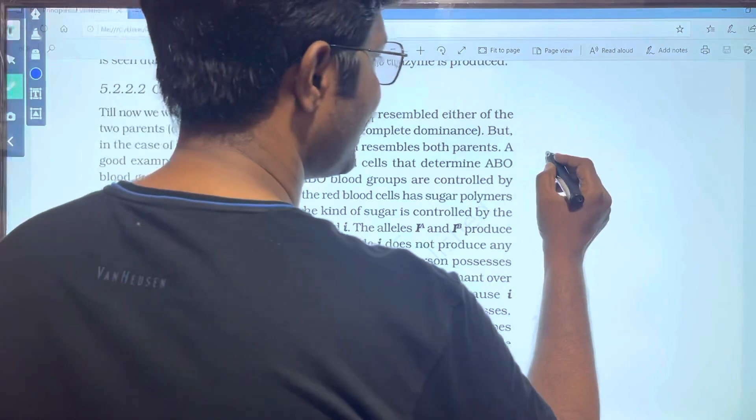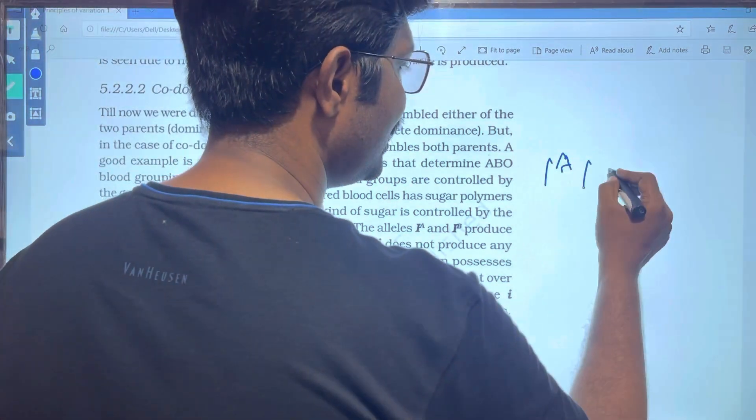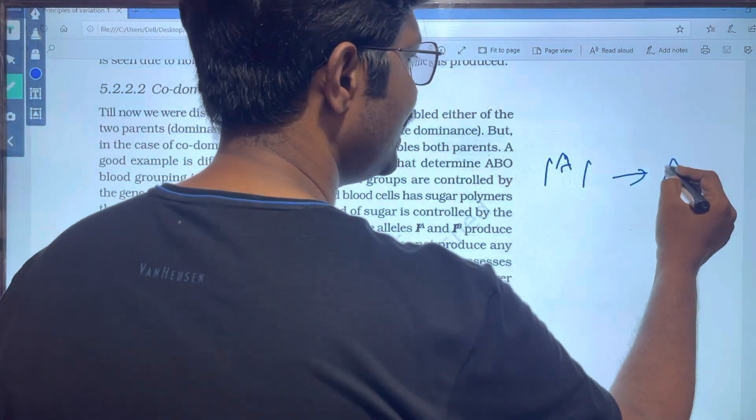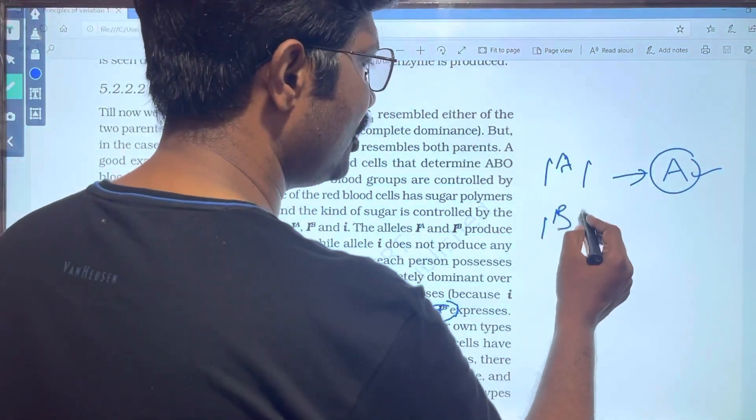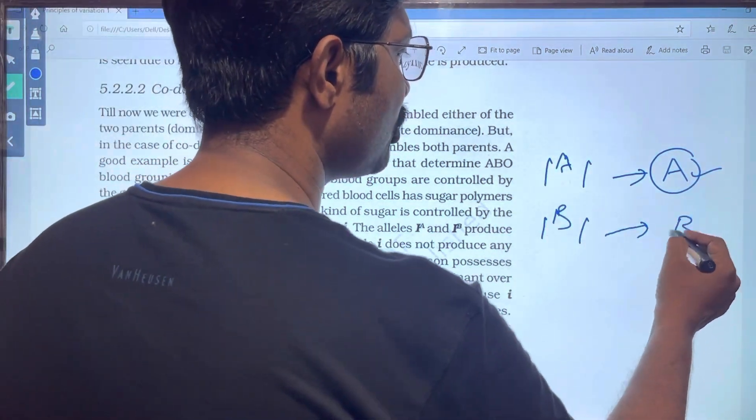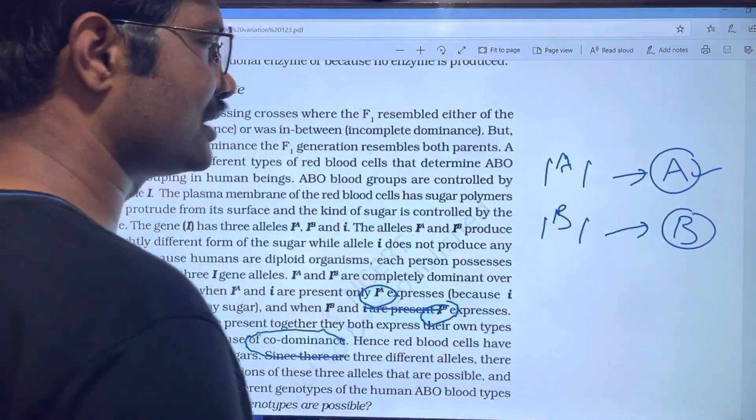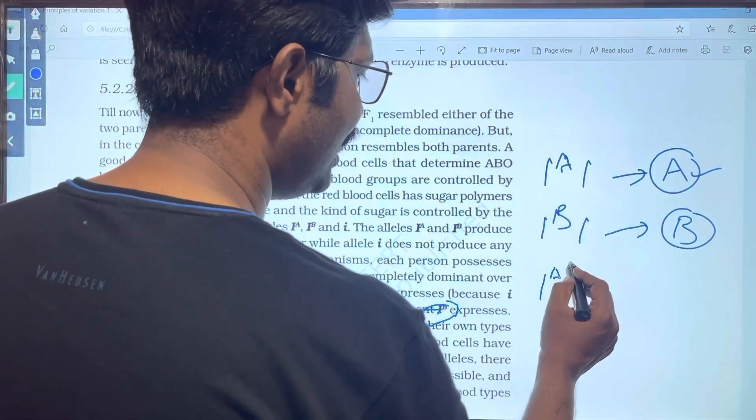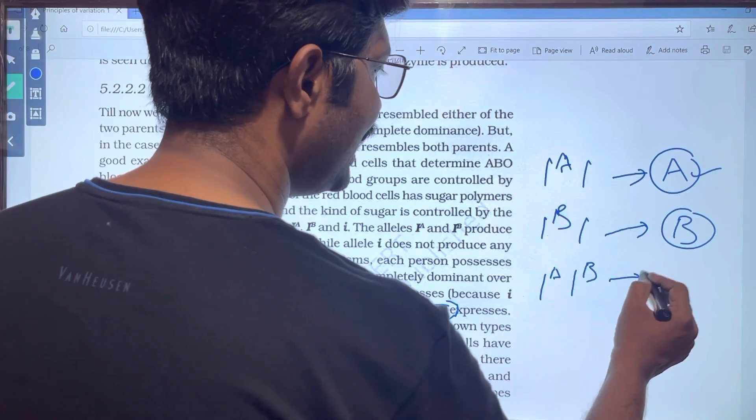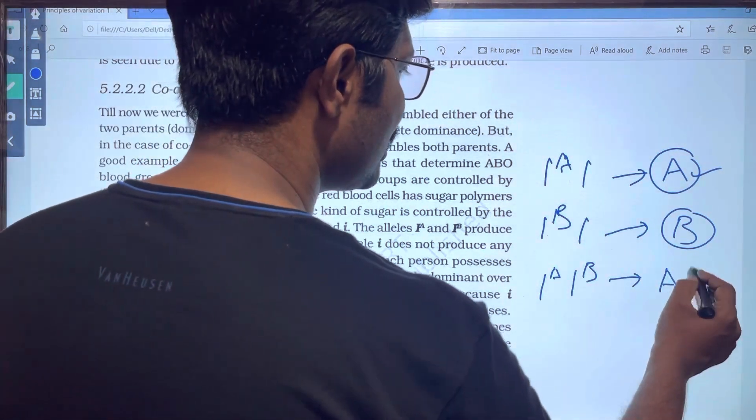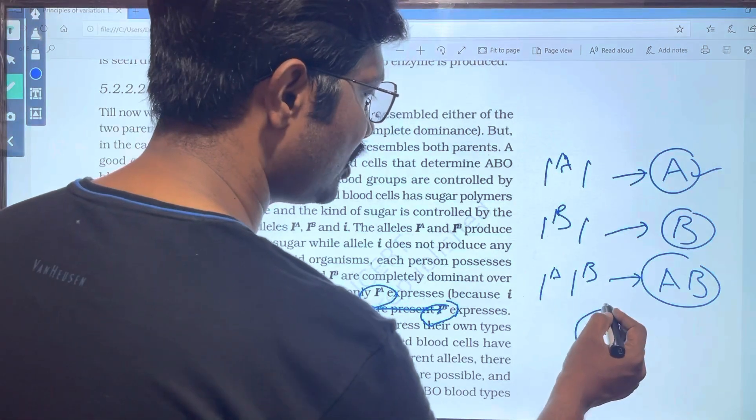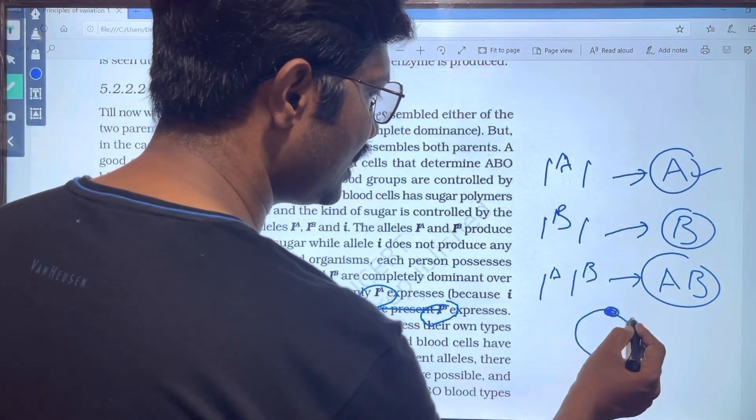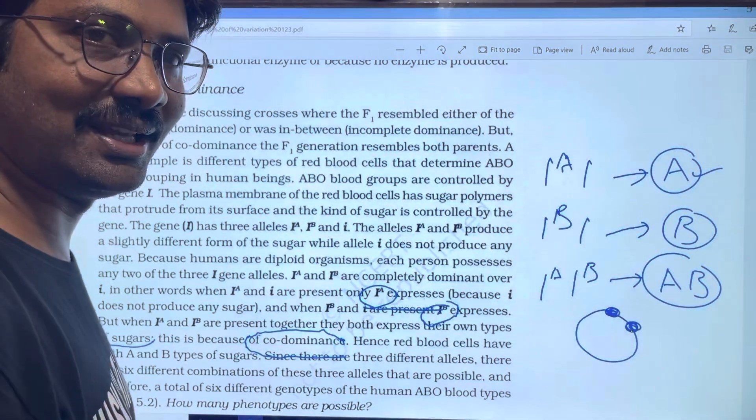For example, IA and I gives A blood group. IB and I gives B blood group. IA and IB present together gives AB blood group. There is an A antigen and B antigen - two antigens.